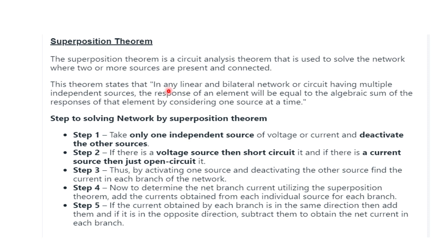In the superposition theorem, there can be a voltage source or current source. While calculating current or voltage, we have to consider one source at a time. Here are the steps for solving a network using the superposition theorem. Step 1: take only one independent source of voltage or current and deactivate the other sources. Step 2: if there is a voltage source, then short circuit it; and if there is a current source, then open circuit it.